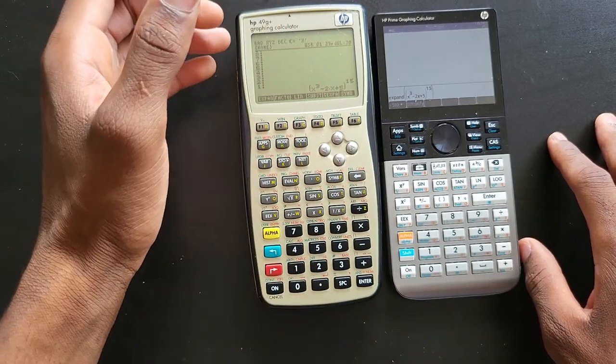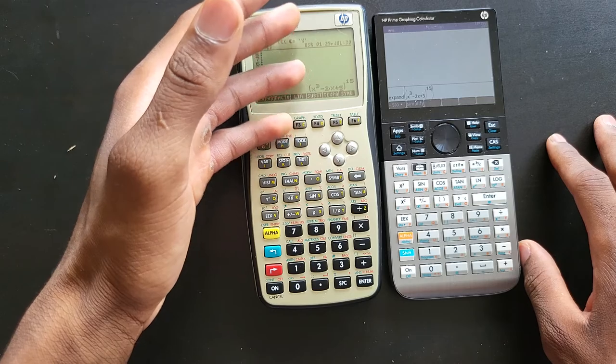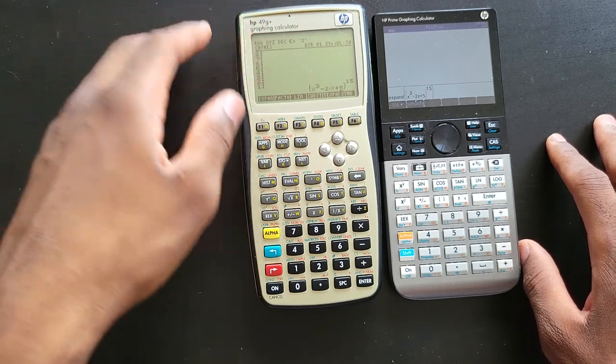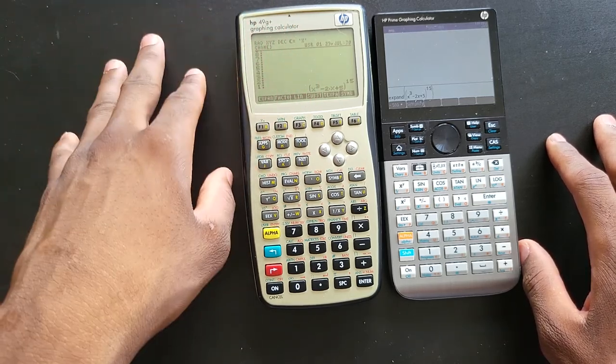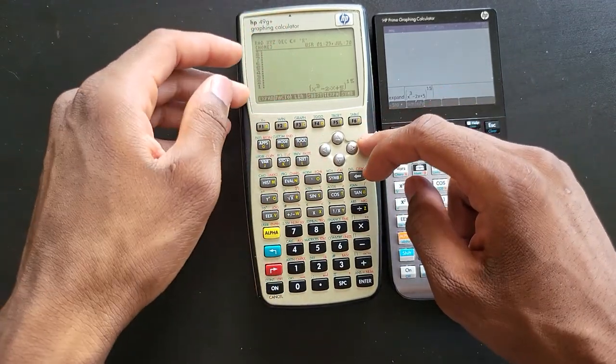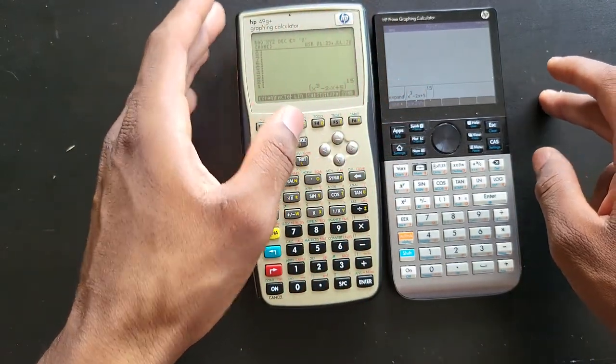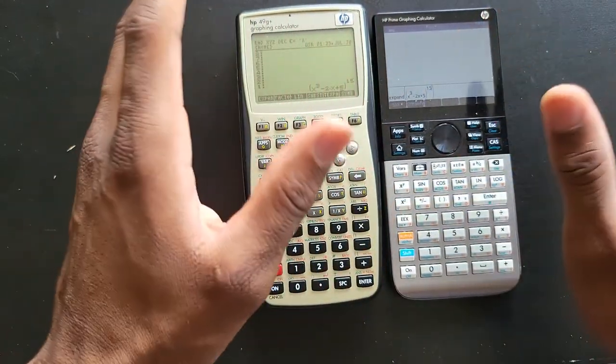The software for this is the same as the 49g which came out in 1999, so about 14 years give or take. Anyways, that's not the point. The point is the difference between a 19-year-old calculator and a 9-year-old calculator, so about ten years apart.